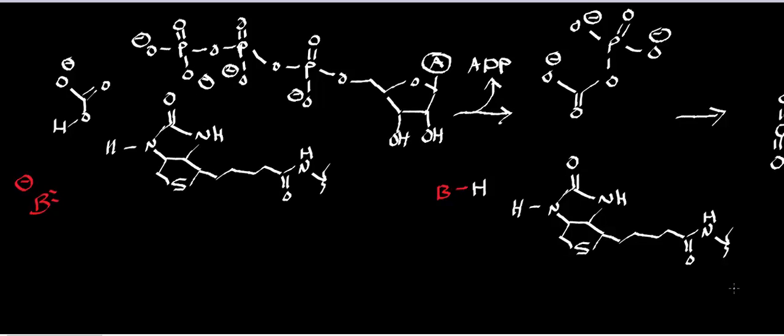Welcome back. We're in the fat biosynthesis playlist, and in this video we're going to look at the biosynthesis of malonyl-CoA. Malonyl-CoA is the molecule used to build fatty acids, and fatty acid biosynthesis is something all organisms do. The building block from which they synthesize fatty acids is acetyl-CoA, but in order to build fatty acids, acetyl-CoA has to be converted into malonyl-CoA.